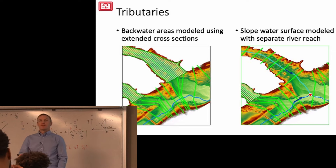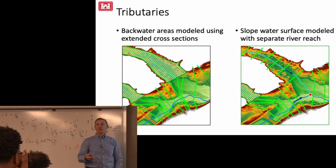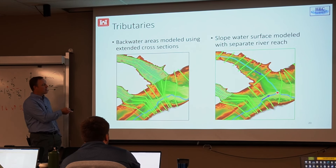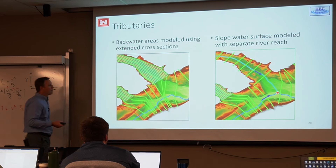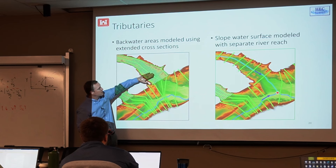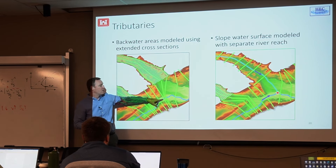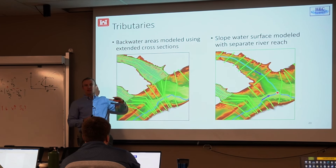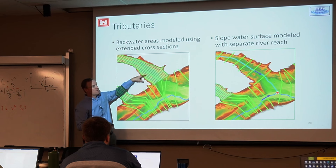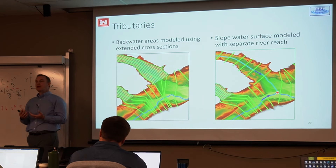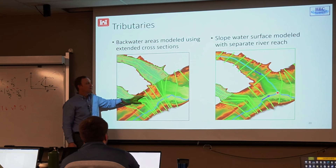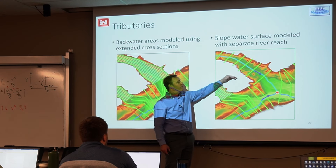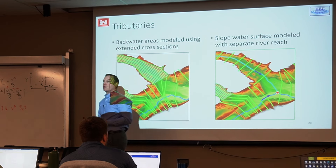Tributaries can be modeled in RAS in several ways. A crude approach is to lay out cross sections for the main river and run them up the tributary, blocking out the tributary with ineffective flow areas. This gives a decent water surface profile, but the water surface will be sloped in the direction of main channel flow, not tributary flow. If the tributary is important, model it as a secondary tributary to get a properly sloped water surface.